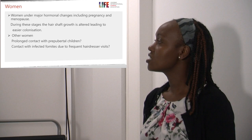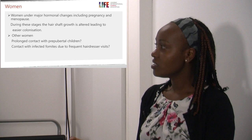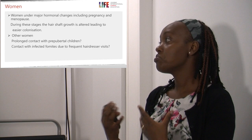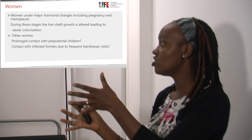For women outside of that group — those not undergoing major hormonal changes — it is not entirely clear why they also form a higher-risk category: possibly prolonged contact with pre-pubertal children, or more frequent contact with infected fomites due to hairdresser visits. Regarding poor hygiene, tinea infections are classified as water-related diseases by the World Health Organization, meaning there is often a relation to insufficient clean water to wash the body or clothes, and low socioeconomic status and poverty compound that.